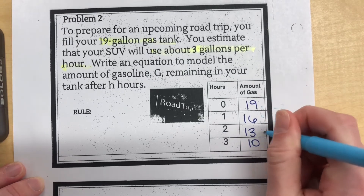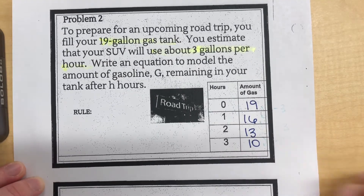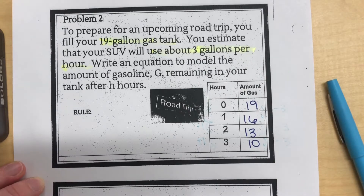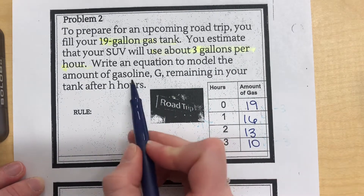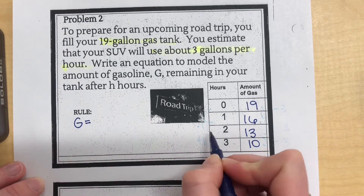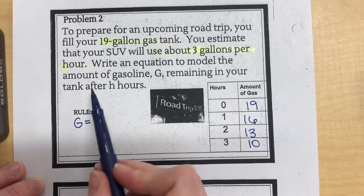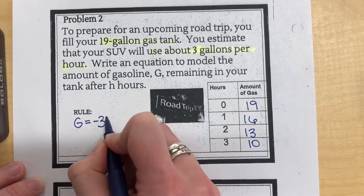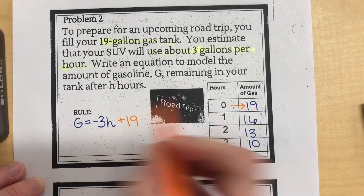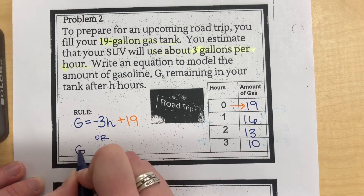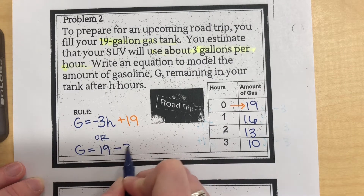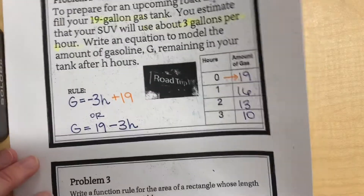That pattern will continue as I drive for longer periods. I'm subtracting 3 as I go on my Y values, and my X pattern stays the same, adding 1. I can write this rule using G for the amount of gasoline: G equals negative 3H plus 19, using H for hours. My pattern was negative 3 over 1, which is negative 3, and when X is 0, Y was 19. You can also rewrite it as G equals 19 minus 3H — signs go with it.